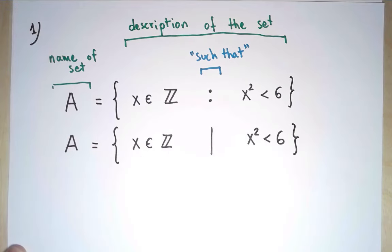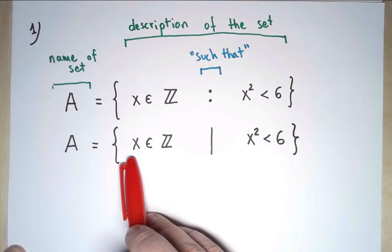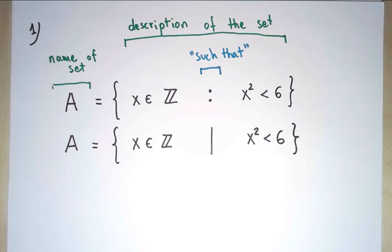Now, what are the two pieces? On the left side, I am saying where I am taking my elements from, and on the right side, I am putting extra constraints.